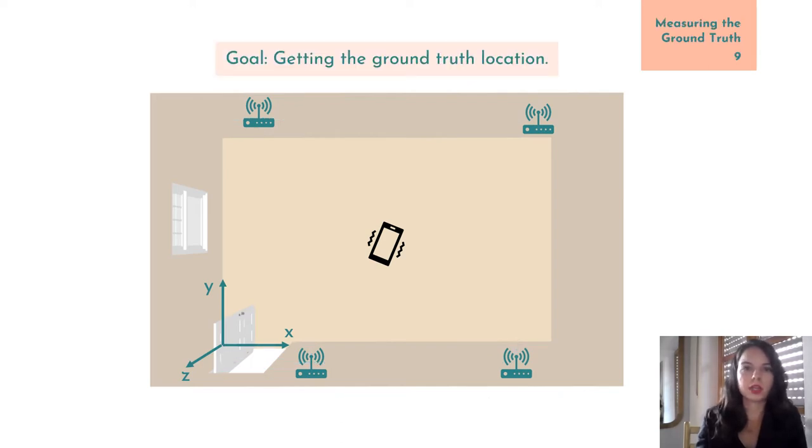When working with localization systems, it is crucial to determine how accurate they are. To compute the accuracy of a localization system, we need to get the ground truth location of a number of test points. We obtain the location error as the difference between the location returned by the system and our ground truth location.